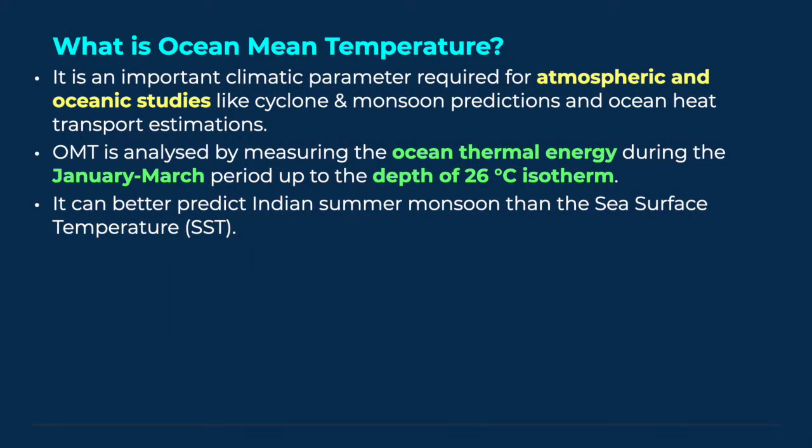What is ocean mean temperature? It is an important climatic parameter required for atmospheric and oceanic studies, like cyclone and monsoon predictions and ocean heat transport estimations. OMT is analysed by measuring the ocean thermal energy during the January-March period up to the depth of 26 degree centigrade isotherm.